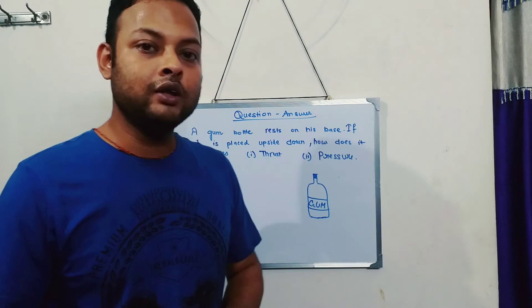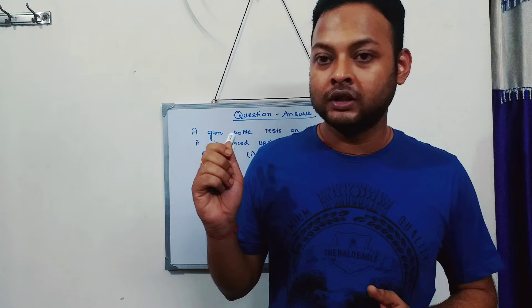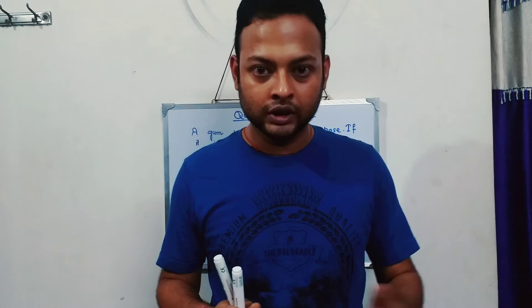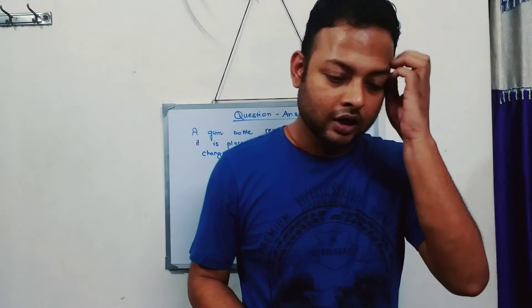Today we will do numericals, but first I will discuss a few reasoning questions. Most of the 41 questions given at the back of your book — about 90% — I have already discussed in the previous eight lectures. For example, the question about why the spanner is long: if the length of the spanner is big, the perpendicular distance becomes big, so we apply less force and still get the turning effect.